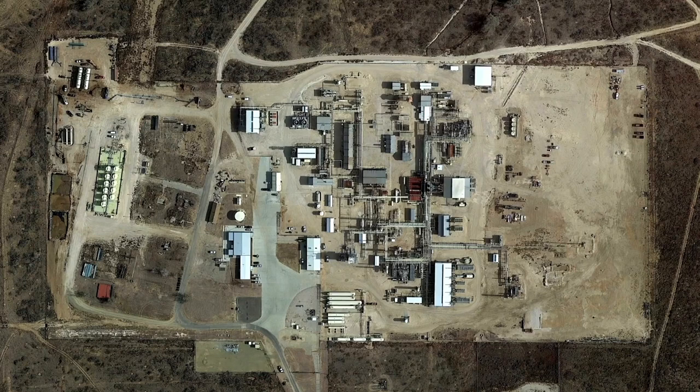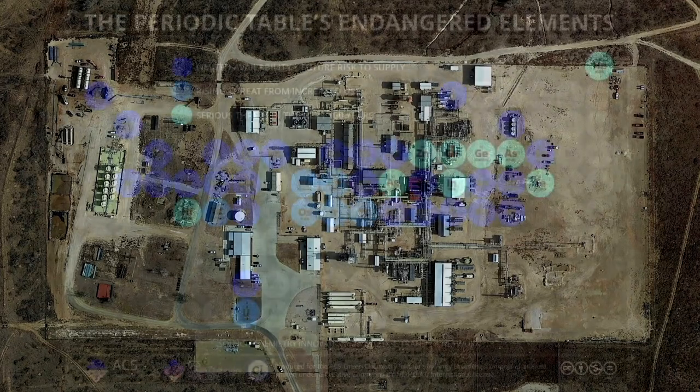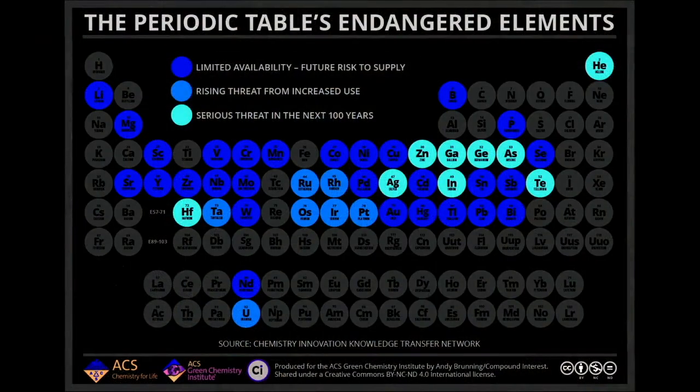Helium is a non-renewable resource. Although it is being produced all the time by radioactive decay of uranium and thorium in the crust of the Earth, we only have access to the gas from wells. As you can see in this chart, helium is under serious threat in the next 100 years. We should probably not be using it frivolously in helium balloons for birthday parties, but rather saving it for serious uses, such as in MRI machines and scientific research.